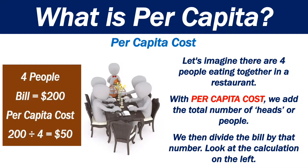Per capita cost. Let's imagine there are 4 people eating together in a restaurant. With per capita cost, we add the total number of heads, or people, and then divide the bill by that number. Look at the calculation on the left: 4 people, the bill is $200, so the per capita cost is $50. That is, each person has to pay $50 to cover the bill.